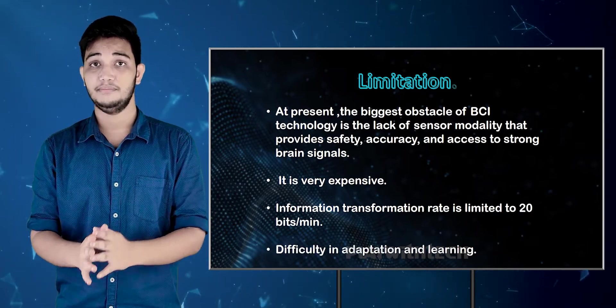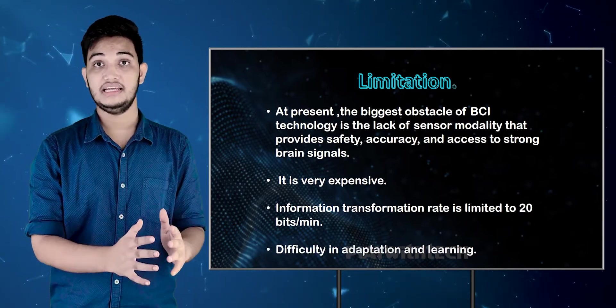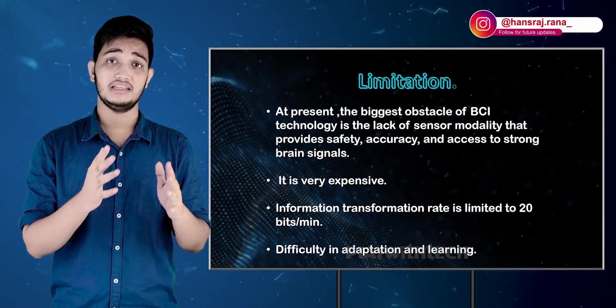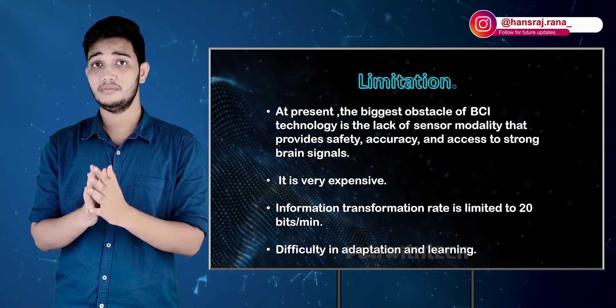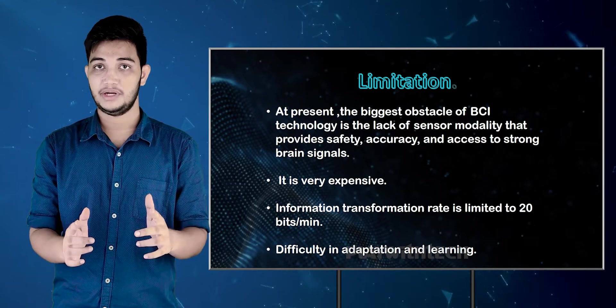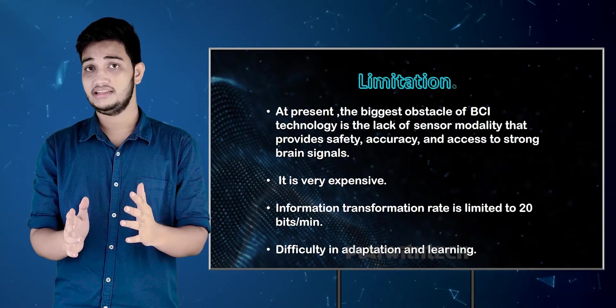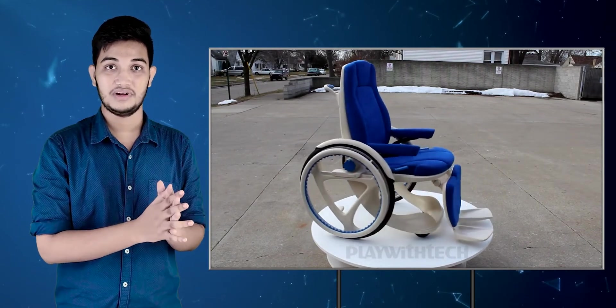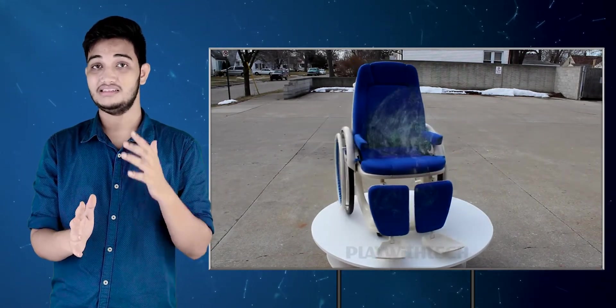Now let's talk about limitations. Even with the technology available today, we can capture signals, but the speed of the brain signal is only 20 bits per minute — which is very slow. The biggest problem is that this technology is very expensive. Also, the user needs to train with it: for example, to run, your brain generates signals that travel to your legs through practice. For a wheelchair, you have to learn to generate the correct mental commands for left, right, forward, and backward movement.